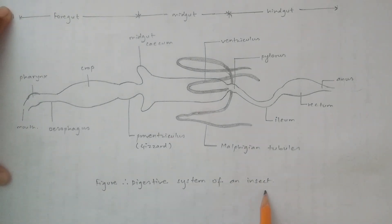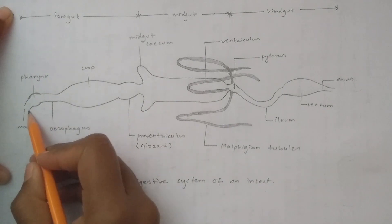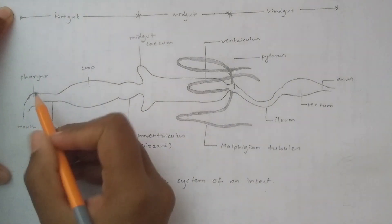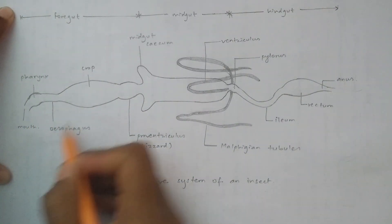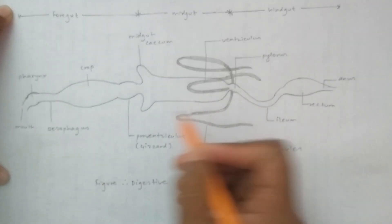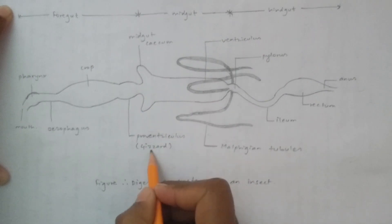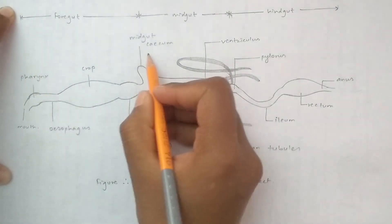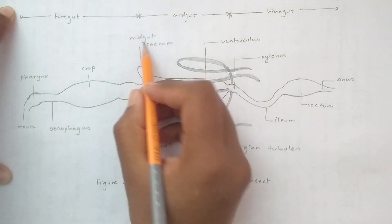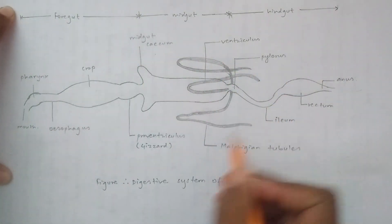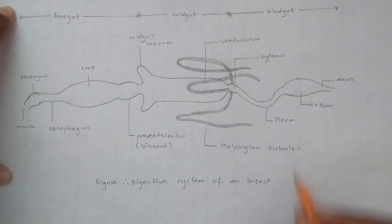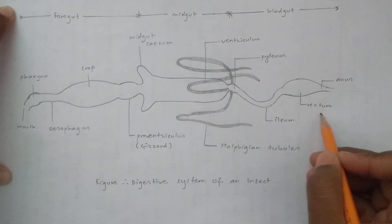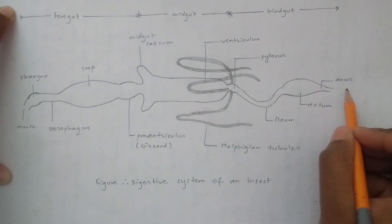What is the digestive system of insects? First, we have mouth, pharynx, esophagus, crop, gizzard, midgut, siccum, ventriculus, pylorus, ileum, rectum, and anus.